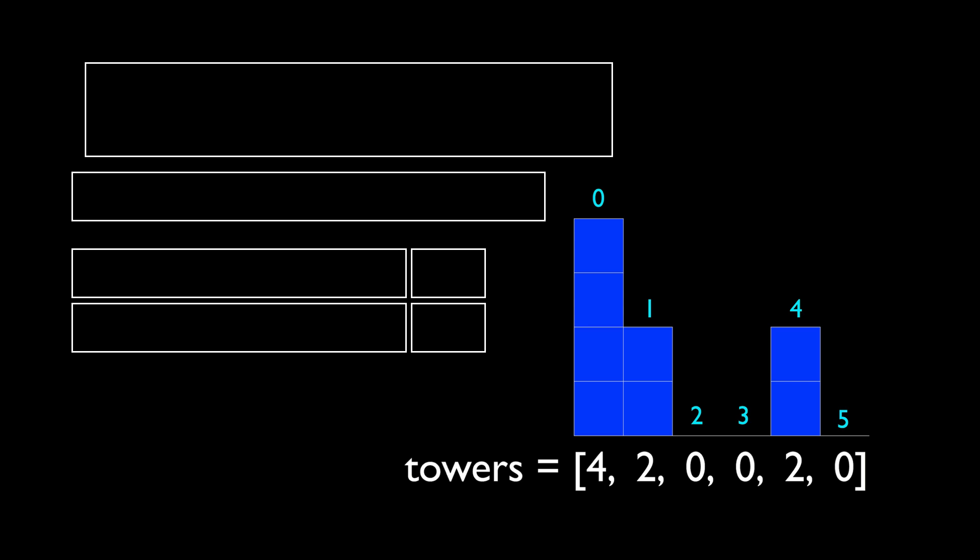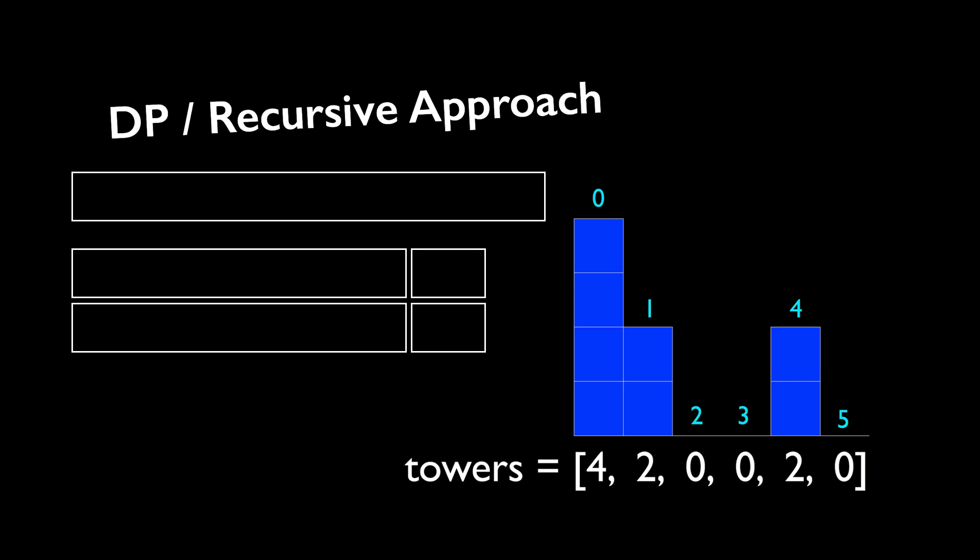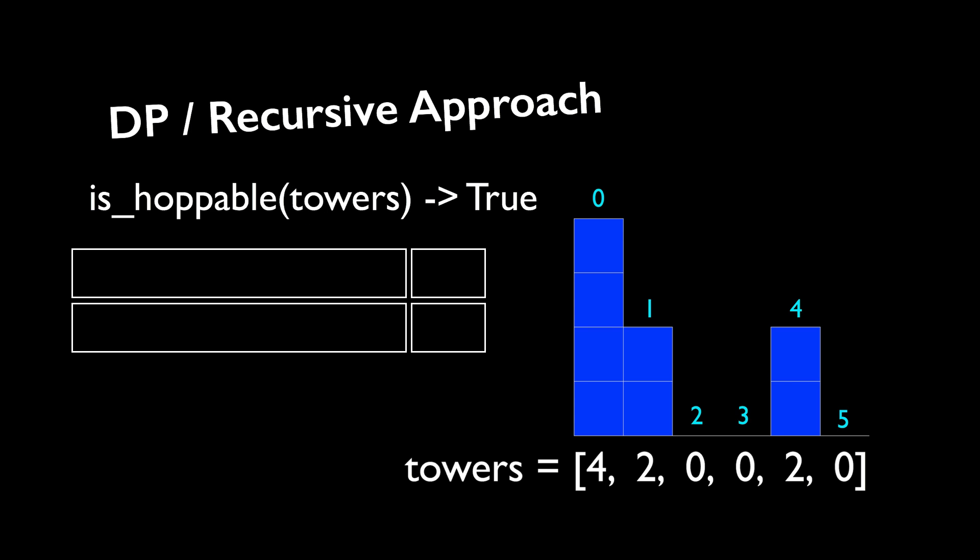Another potential solution is a dynamic programming or recursive approach. The original isHoppable problem seems hard, so the idea is to break it down into smaller problems and solve those instead.